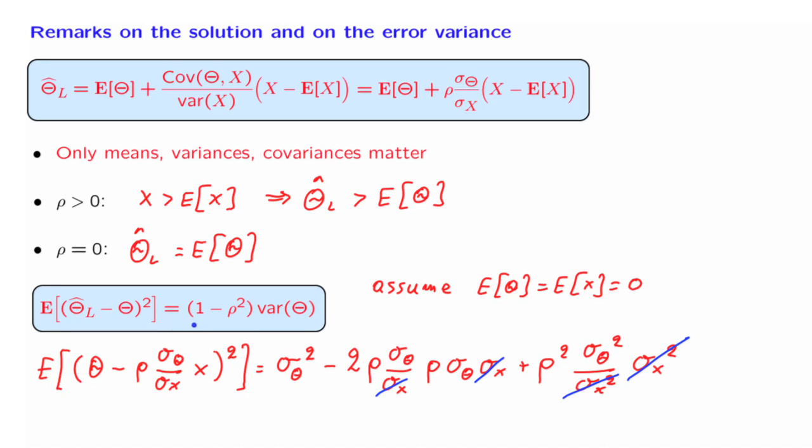What is this factor? If rho is equal to 0, then this coefficient is 1 and we do not have any variance reduction. After all, when rho is equal to 0, this estimator is not very useful. It doesn't help us estimate theta better. So the expected value of the squared error is the same as the variance of theta.